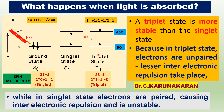In the triplet state, the electrons are unpaired, therefore there is lesser inter-electronic repulsion. This is why the triplet state is more stable than the singlet excited state. Thank you for watching.